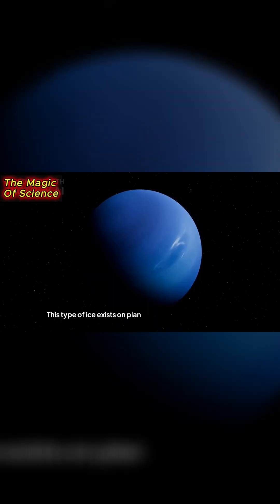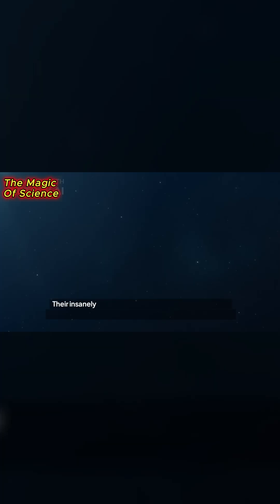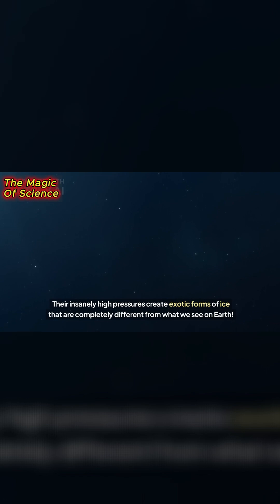Beyond Earth? This type of ice exists on planets like Neptune and Uranus. Their insanely high pressures create exotic forms of ice that are completely different from what we see on Earth.